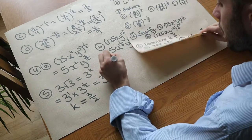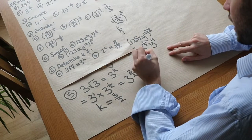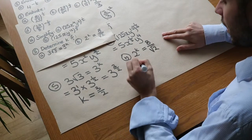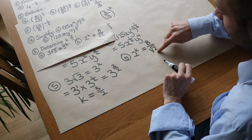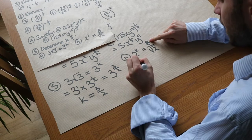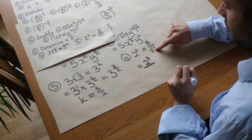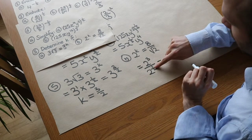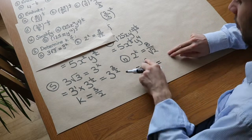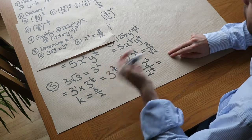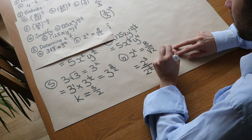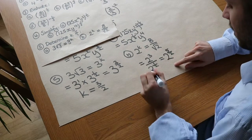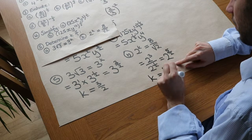For part b, 2 to the k equals 8 over root 2. We write everything as powers of 2: 8 is 2 cubed, and root 2 is 2 to the half. When dividing power expressions we subtract the powers: 3 minus a half is 2 and a half, or 5 over 2 as an improper fraction. So 2 to the 5 over 2 equals 2 to the k, and since the bases are the same, k equals 5 over 2.